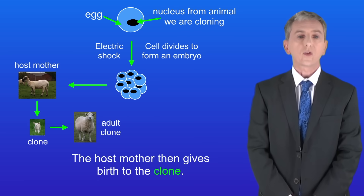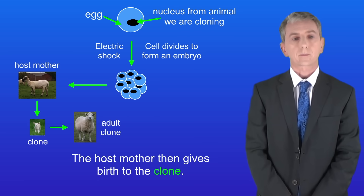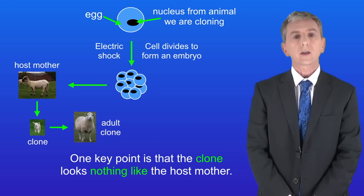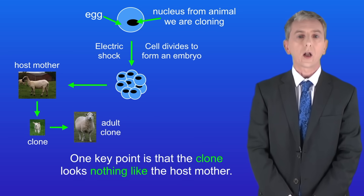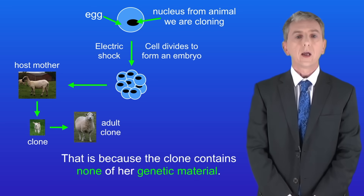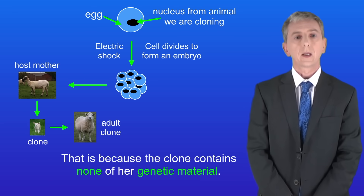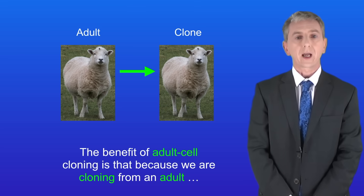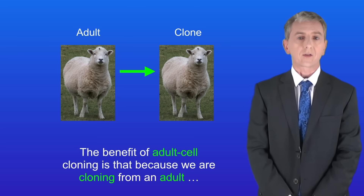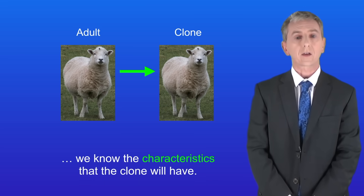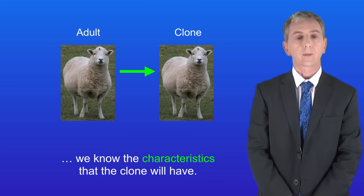The host mother then gives birth to the clone. One key point is that the clone looks nothing like the host mother, and that's because the clone contains none of her genetic material. So just to recap, the benefit of adult cell cloning is that because we're cloning from an adult, we know the characteristics that the clone will have.